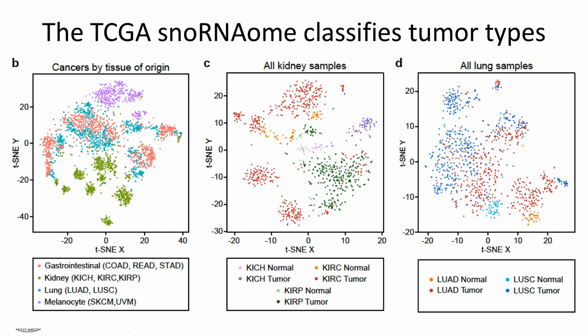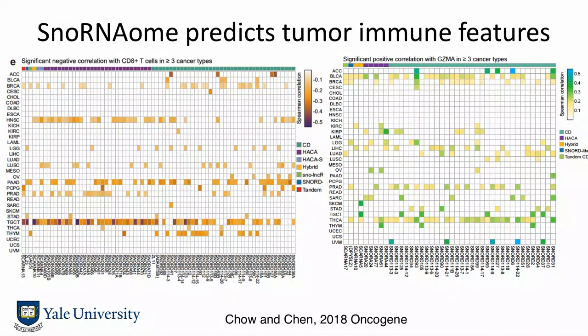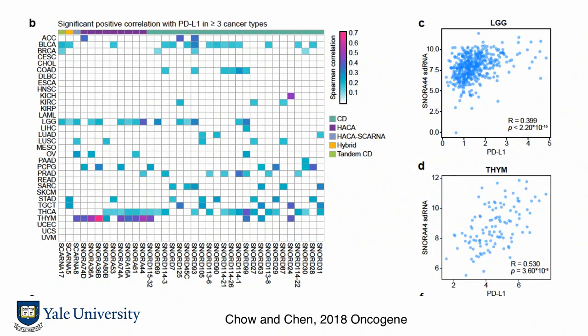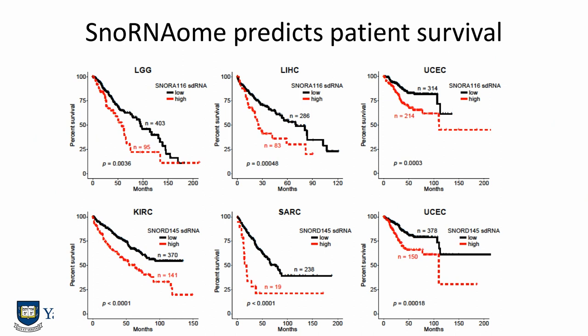We can group snoRNAs by origin. For example, some snoRNA signatures can classify cancer types like gastrointestinal, kidney, lung, and melanocytes. You can also sub-classify more specifically, such as distinguishing lung adenocarcinoma from lung squamous. We can correlate these to immune signatures — for example, CD8 T-cell infiltration using the CIBERSORT method, Granzyme as an effector cytokine, and PD-L1. We're trying to find the genes that are important in order to make a library to knock them out, which is still ongoing, and we hope to further refine them using signatures that classify patient survival.